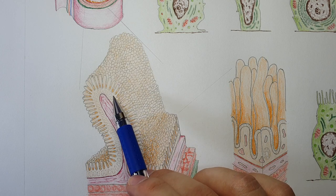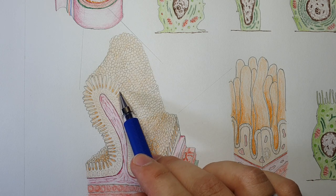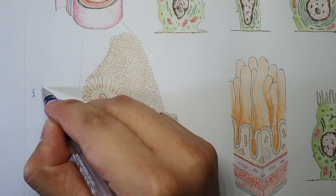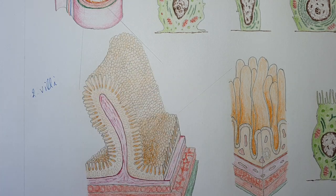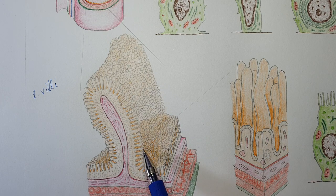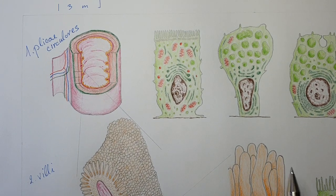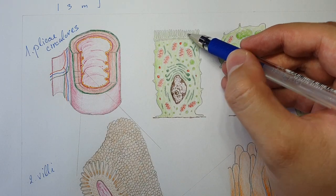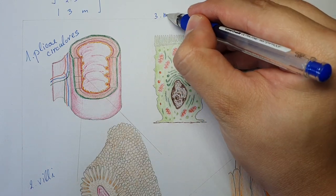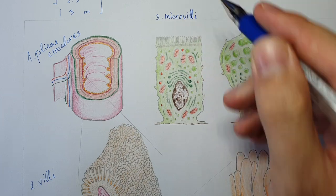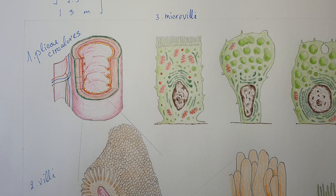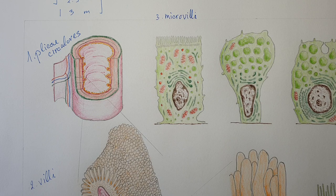The second structure are villi — folds only of the mucosa — and there are many of them, also making the surface area bigger. The third structure involves microvilli: the main cell in the epithelium is the enterocyte, and the enterocyte has these projections called microvilli. Together, without all three structures the surface area would be about one to two square meters, but with them it becomes about 900 square meters.